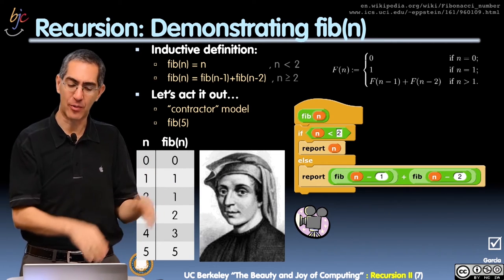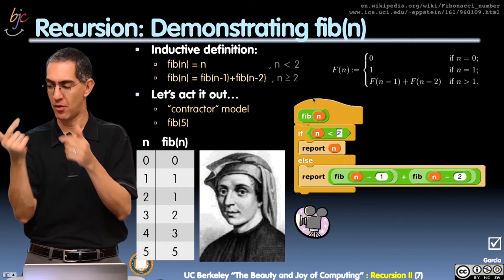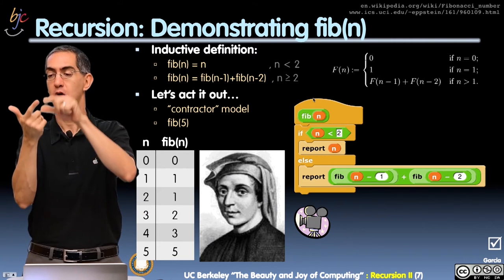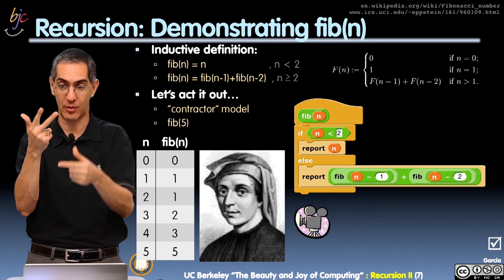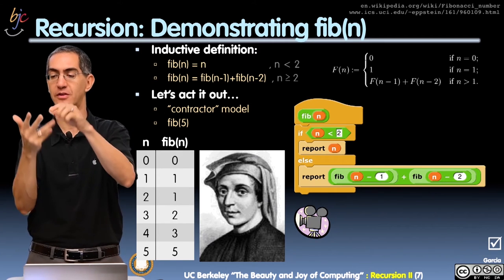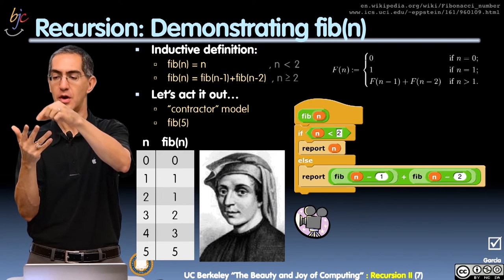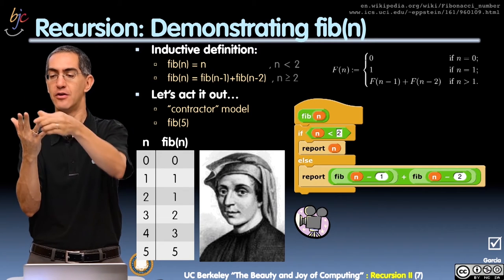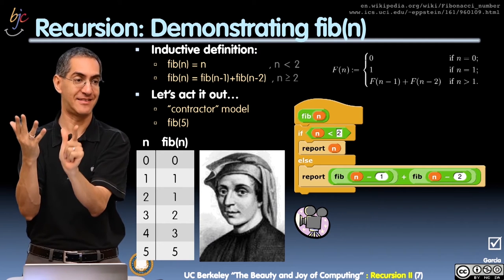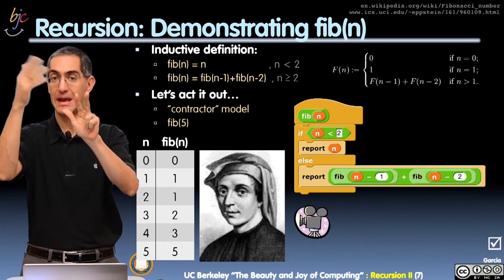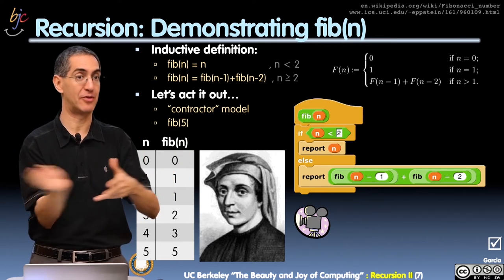And if you see the sequence, it's a beautiful sequence. The sequence is zero, one — zero plus one is one, so the third number is one. One plus one is two. One plus two is three. Two plus three is five. Three plus five is eight. Five plus eight is thirteen. It keeps going — there's a beautiful, pretty pattern that goes up and it grows very fast.